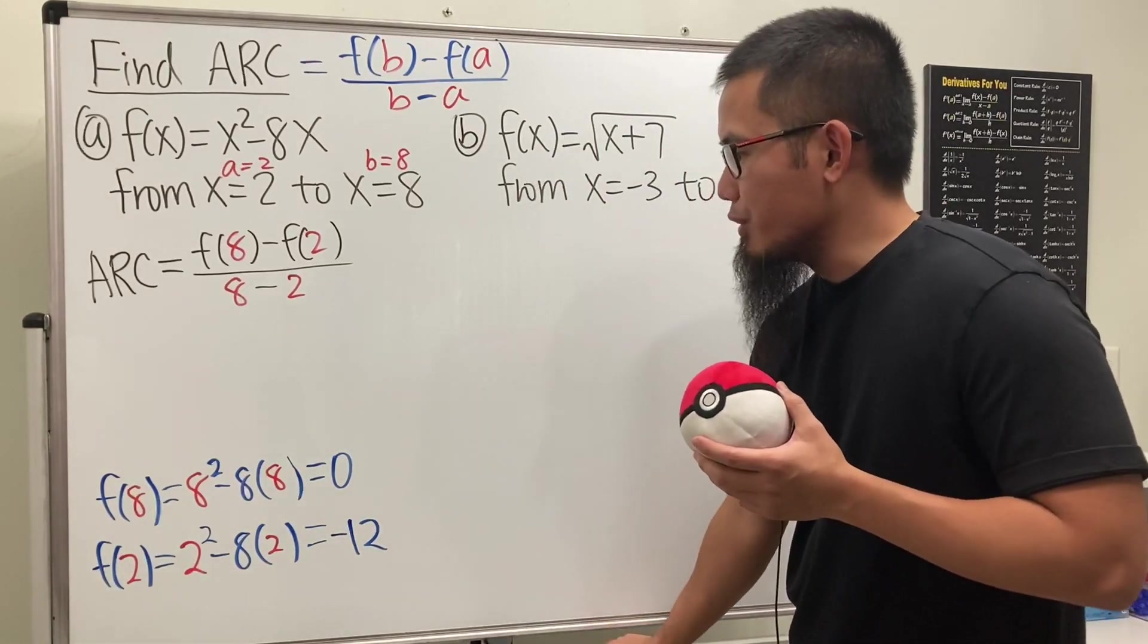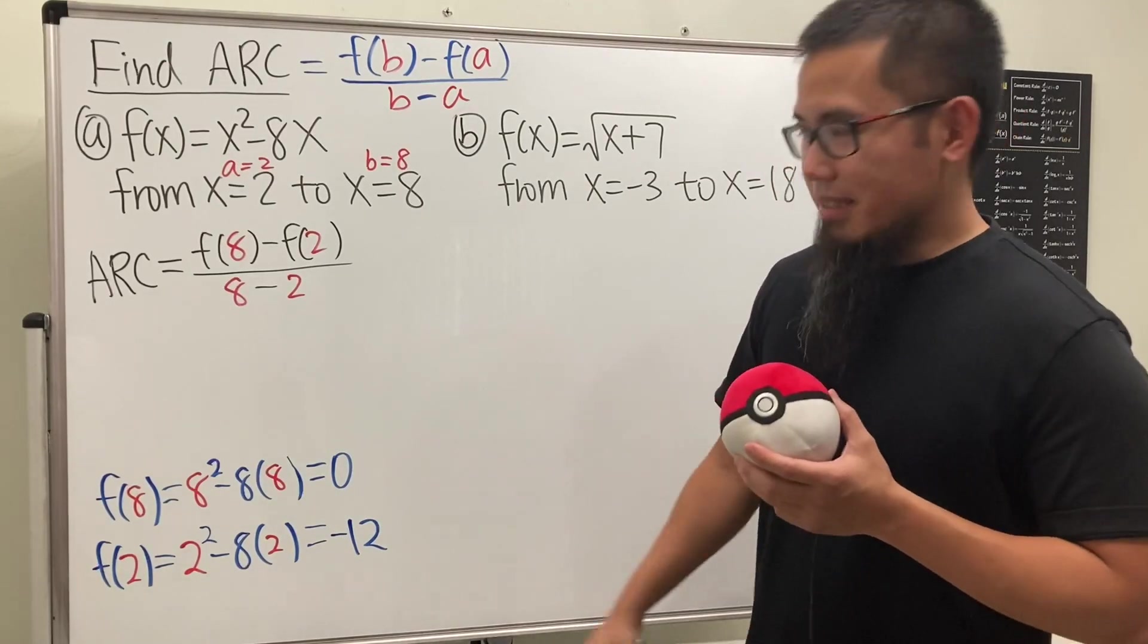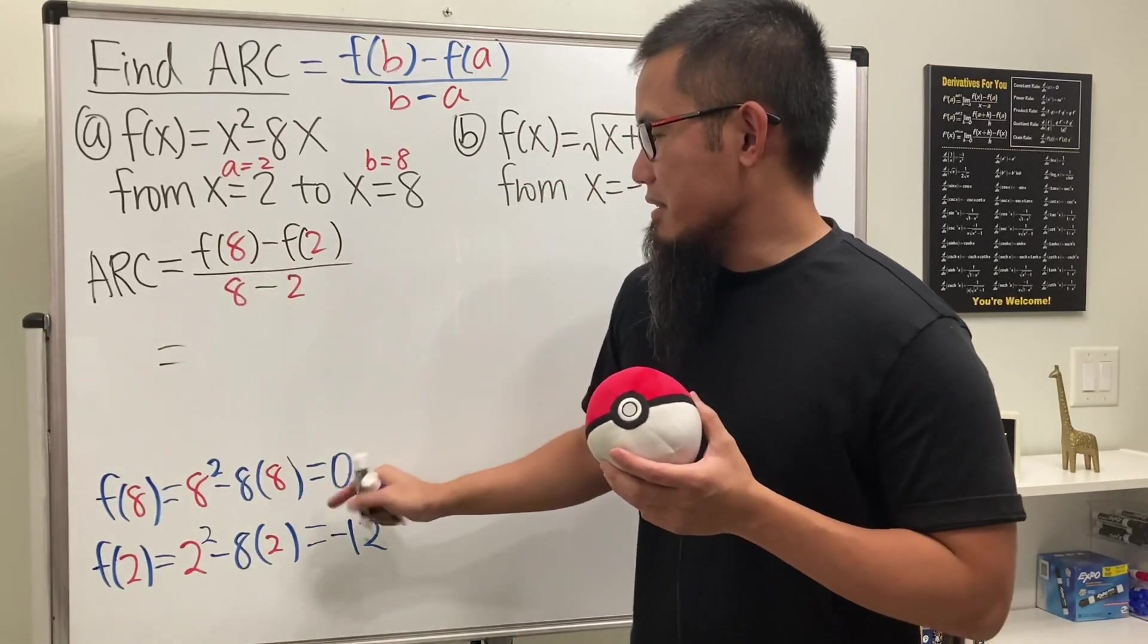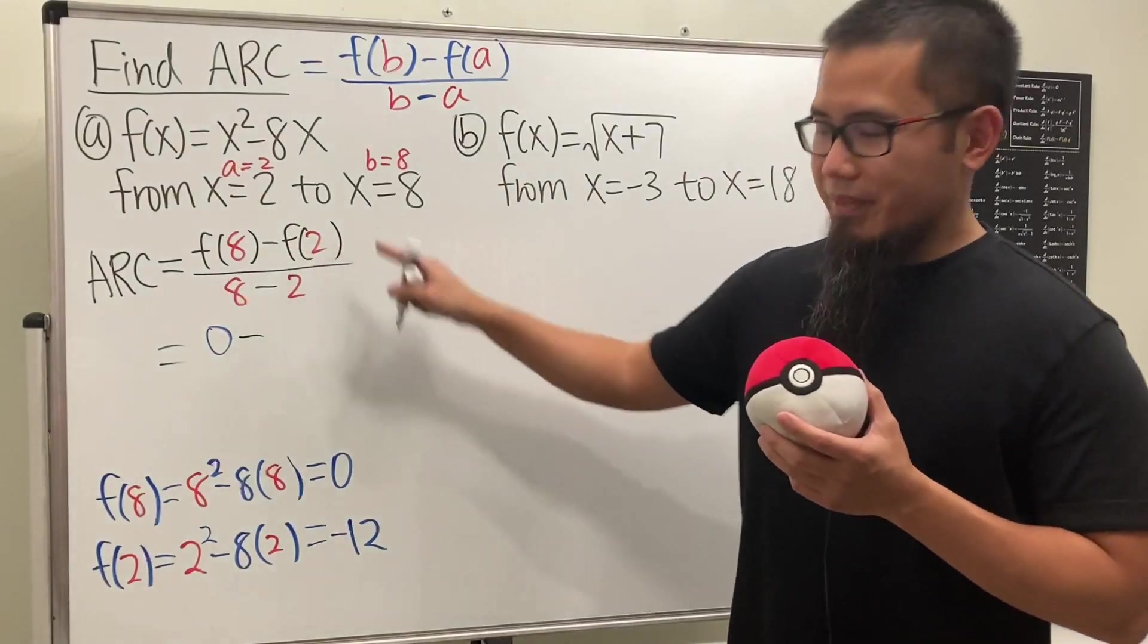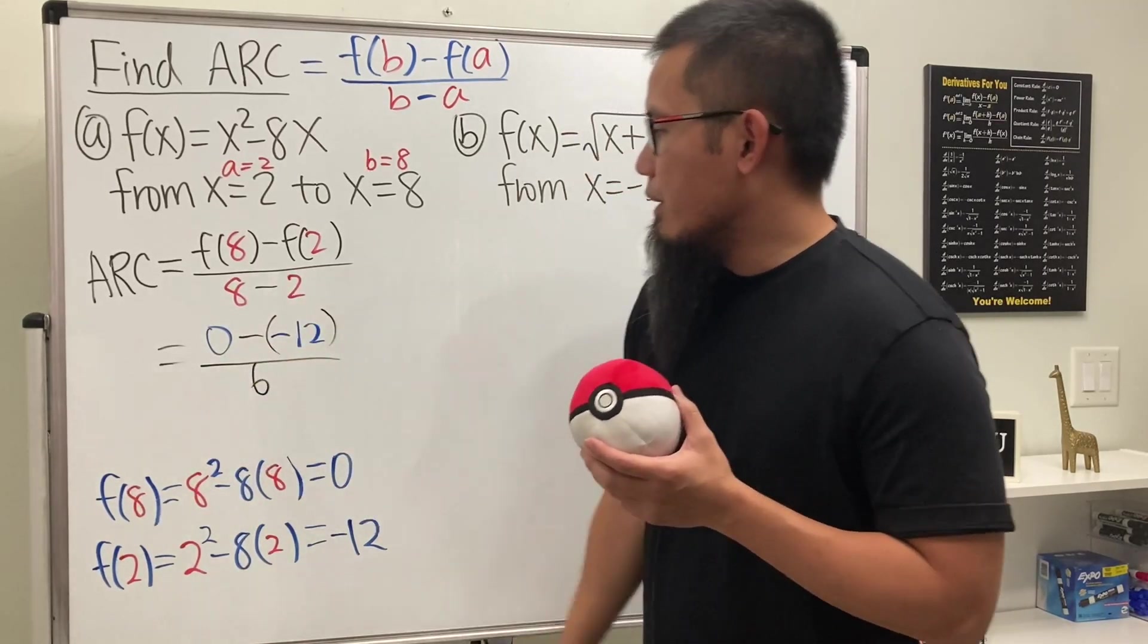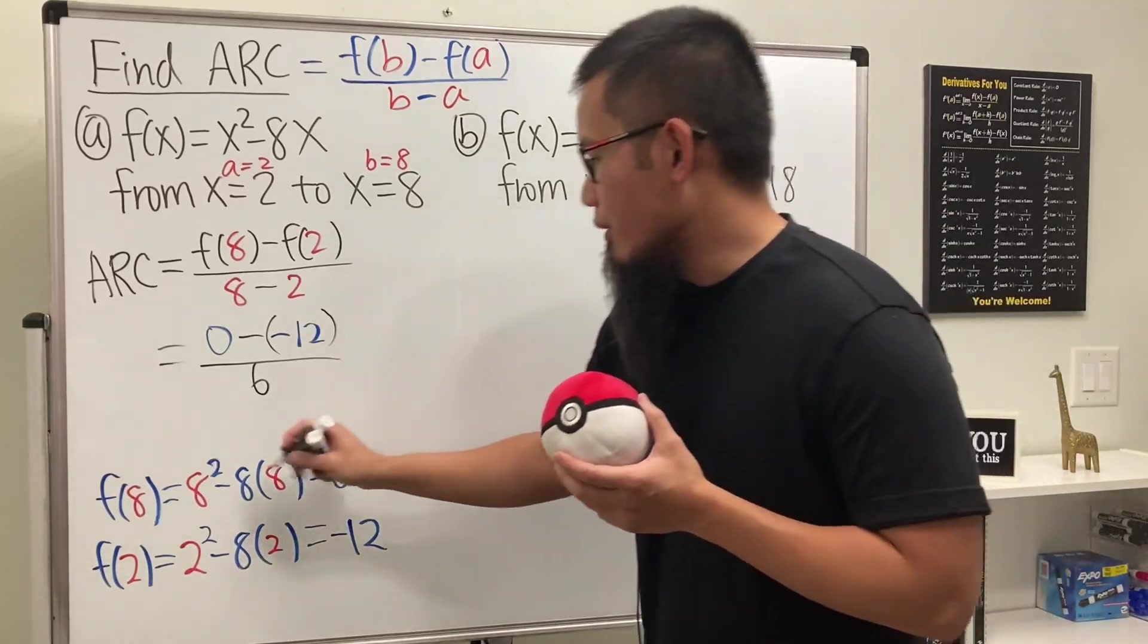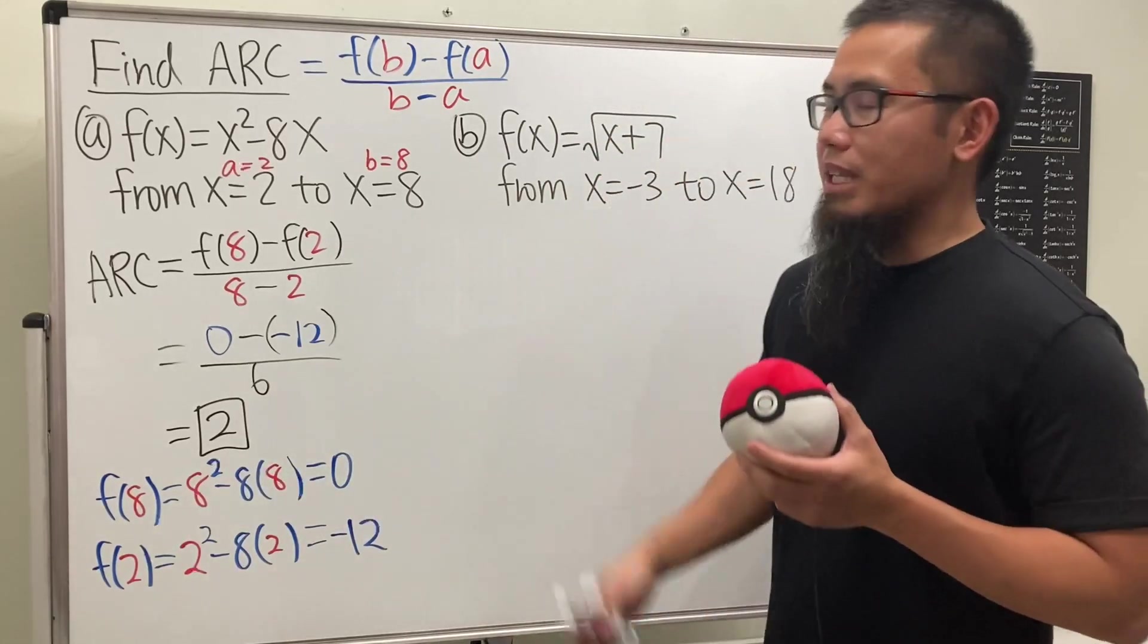So this right here is zero, and then minus f of 2 is negative 12, so we'll just put it down like this: minus negative 12 and then divide it by 6. On the top it's just 12 over 6, so all in all we just get 2.